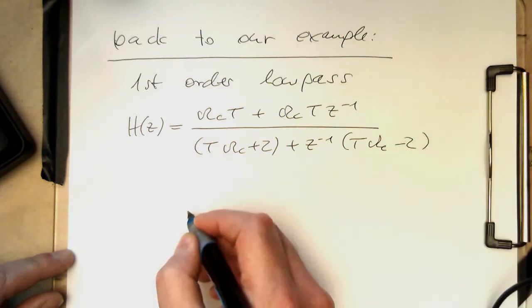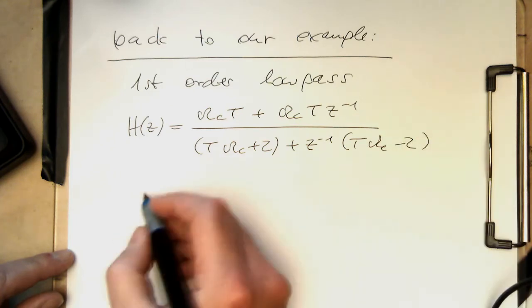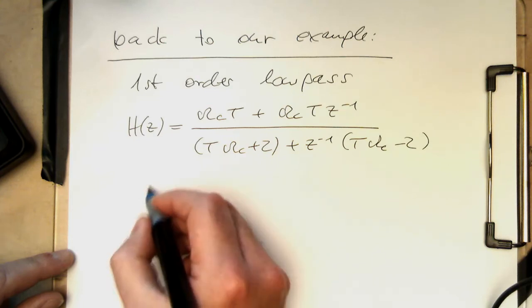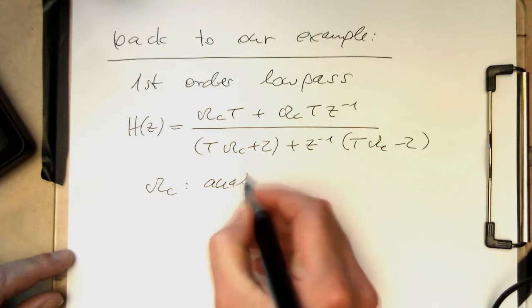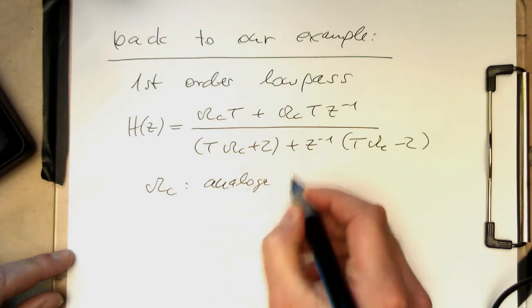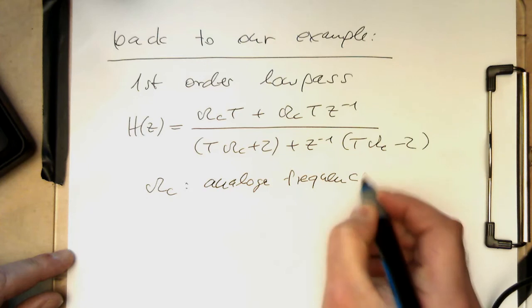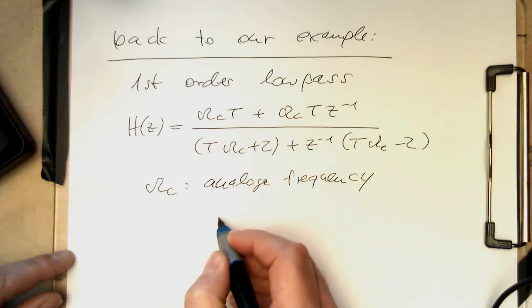The pre-warp means that, remember, the omega c is actually an analog frequency, but we would like to have our digital frequency.